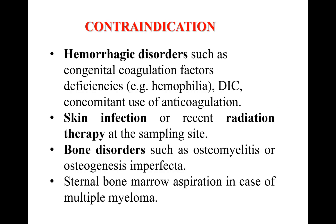Indications for bone marrow examination include infiltrative disorders like malignancy, metastasis, leukemias, lymphomas, granulomatous diseases like tuberculosis, Wilson's disease, hemochromatosis, unexplained thrombocytopenia, unexplained anemia, aplastic anemia, and pyrexia of unknown origin. Contraindications include bleeding tendency due to coagulation factor deficiency, DIC, or anticoagulation therapy. Other contraindications are skin infection at the sampling site, recent radiotherapy, bone disorders making bone friable, and in multiple myeloma, we avoid sternal bone marrow aspiration due to risk of pathological fractures.